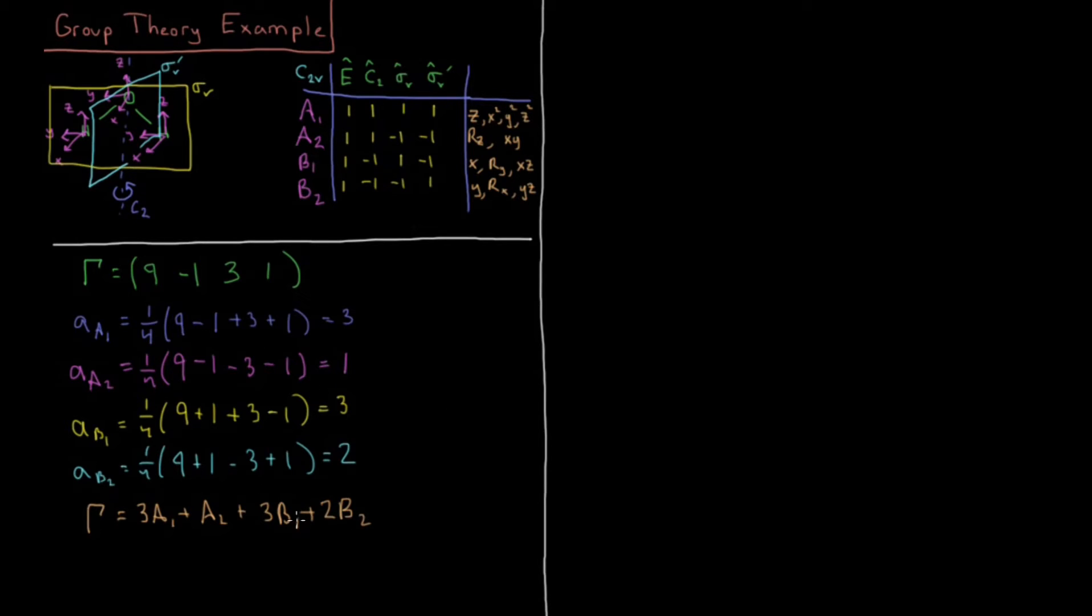Okay, so our irreducible representation is going to be 3A1 plus A2 plus 3B1 plus 2B2. All right, that's all we would have done in previous videos, but now let's take this one step further to add in what we know about vibrations, rotations, and translations, and how to use this little corner over here inside of the character table.